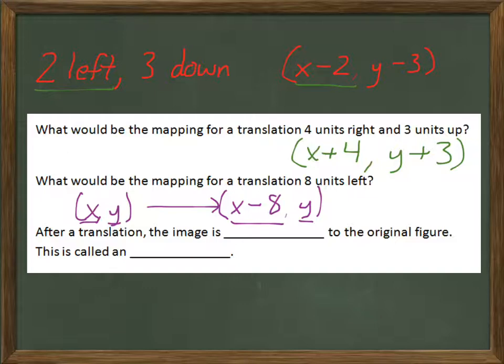Just a couple other quick notes. So after a translation, the image is congruent to the original figure. All we did was slide it. We didn't actually change the dimensions. And this is called an isometry. Whenever the figure remains congruent to its original form.